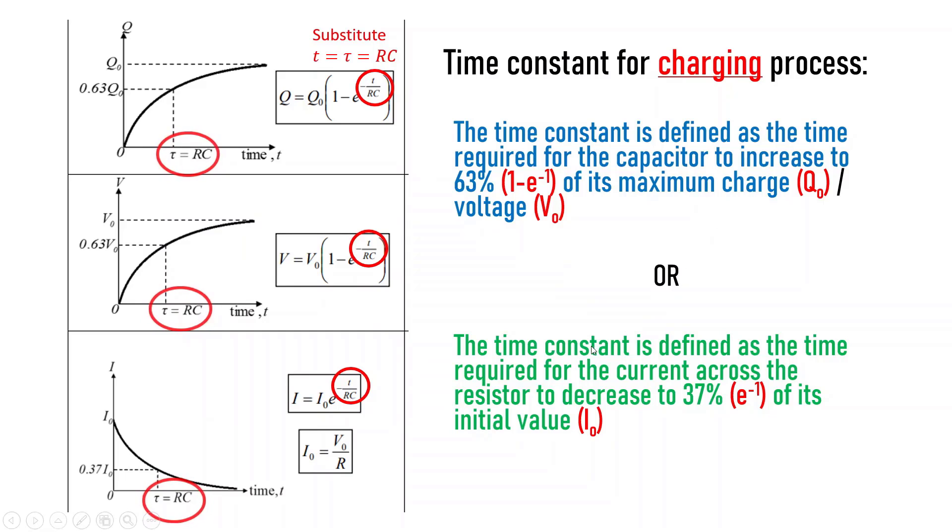we can also say that the time constant for charging process is defined as the time required for the current across the resistor to decrease to 37% of its initial value.